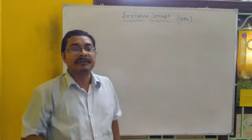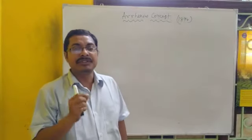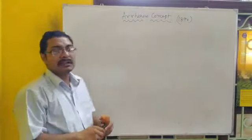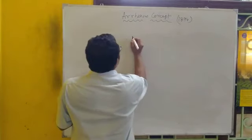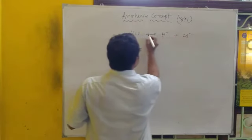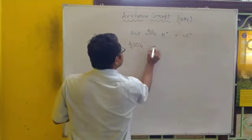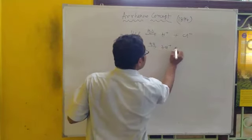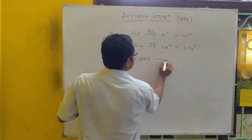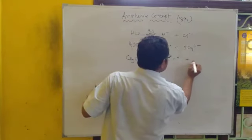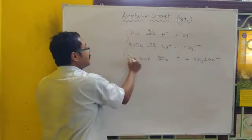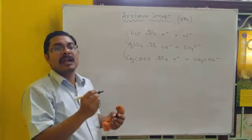According to Arrhenius concept, acids are hydrogen-containing substances which dissociate in water and give H+ ion in aqueous medium. Examples of Arrhenius acids include HCl, H2SO4, and acetic acid. HCl gives H+ and Cl- in water. H2SO4 in water gives H+ and HSO4-. All of these give H+ ion in aqueous medium, so these are acids.